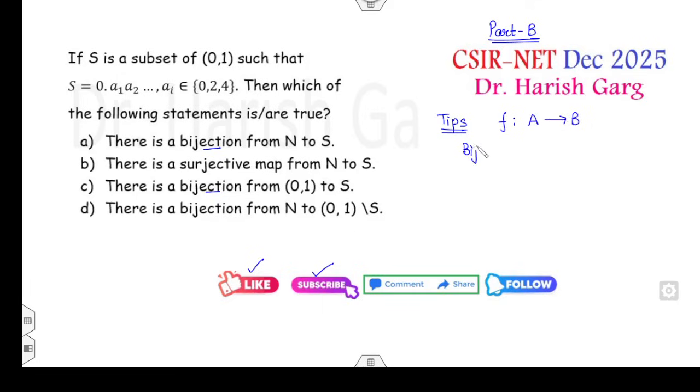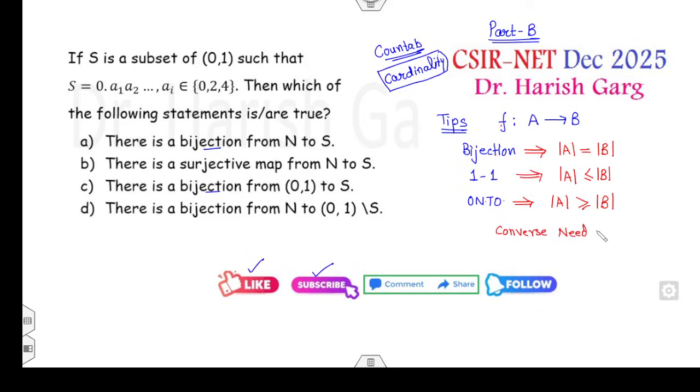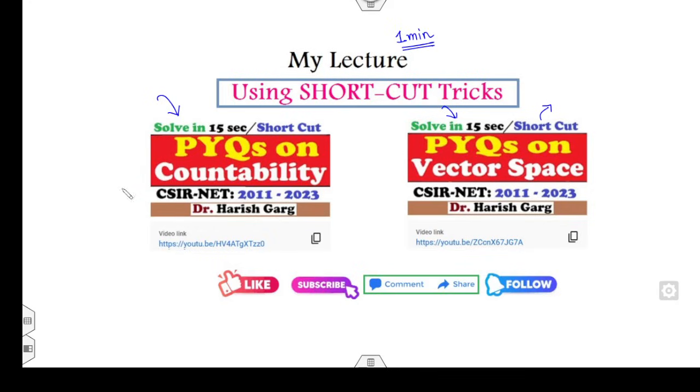Let's start with the first question. Always remember students, what I have told you in my previous lectures: whenever there is a map from A to B, whenever they are talking about bijective, one-one, or onto, you always look about the countability. That means you always look about the cardinality. I can quickly recall that if f is bijective, that implies cardinality of A and cardinality of B are same.